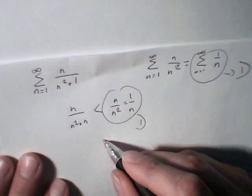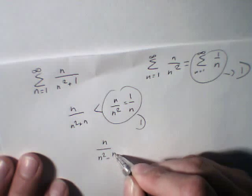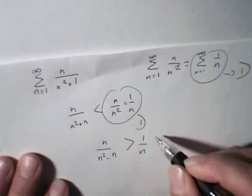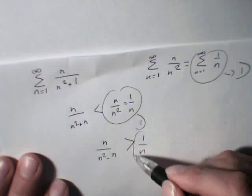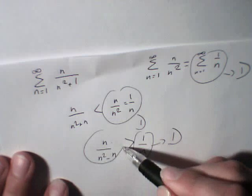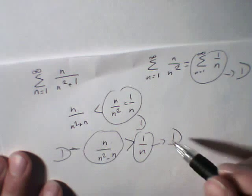On the other hand, if we had had n divided by n squared minus n, we would have known that it would have been superior to 1 divided by n. So this one being divergent, we would have known that this one is divergent too, because it's bigger. It's superior to the other one.